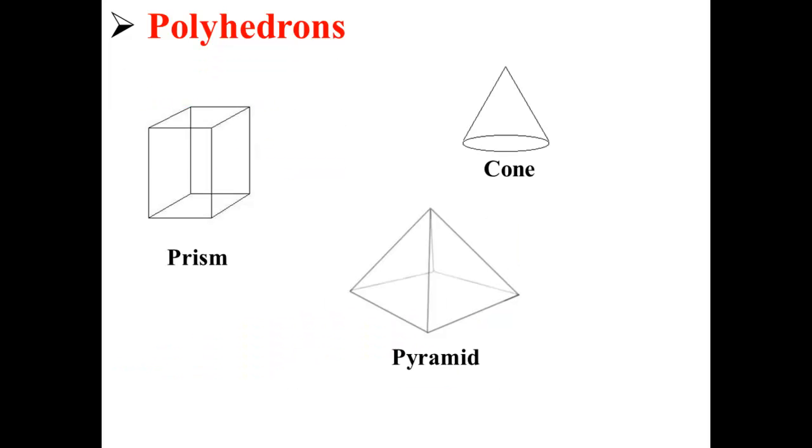Here we have three more examples of polyhedrons. A prism, a cone, and a pyramid are all types of polyhedrons.